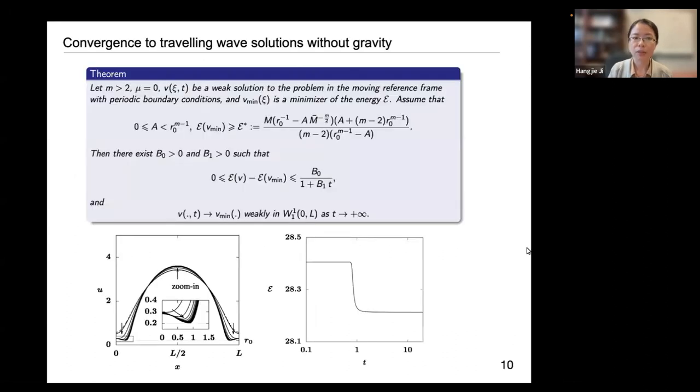Here we present the results for the convergence to traveling wave solutions without the gravity. Here the minimum, the energy minimizer V mean is just the traveling wave solutions that we are interested in. Here we present a typical numerical simulation of a PDE solution convergence to an energy minimizer or a traveling wave solution in the case when gravity is not present. And here is the corresponding energy that shows that the energy would attain its minimum as your solution attains the traveling wave solution.